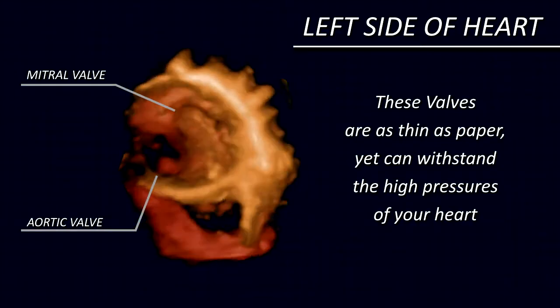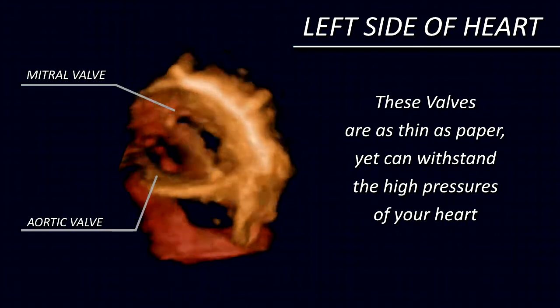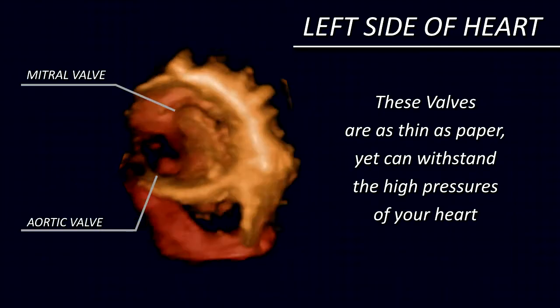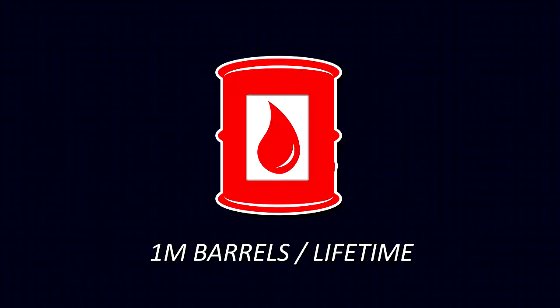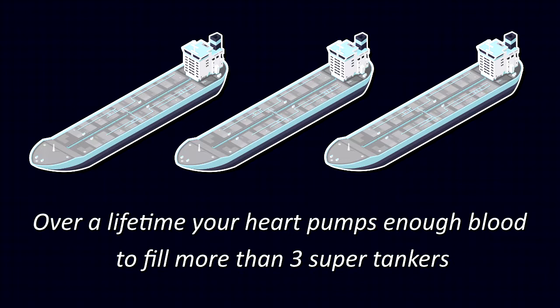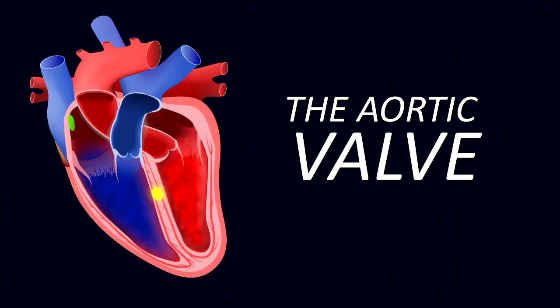That is an amazing amount of work for a structure as thin as a piece of paper. The heart pumps about 5 quarts of blood every minute, which amounts to close to 1 million barrels of blood during an average lifetime — enough to fill more than 3 supertankers. These valves are really important. We will first begin by talking about the structure, function, and diseases of the aortic valve.